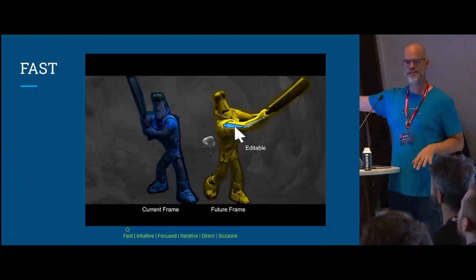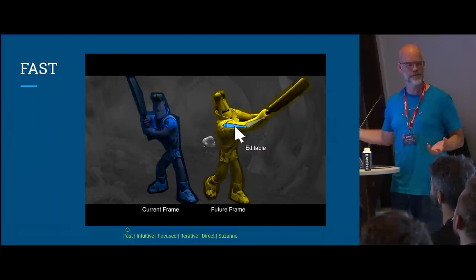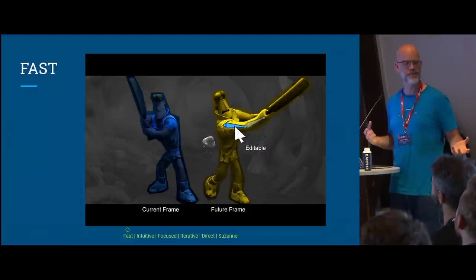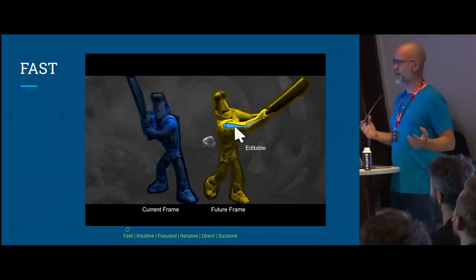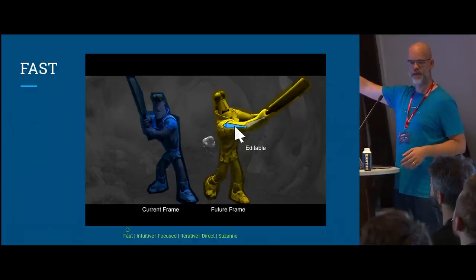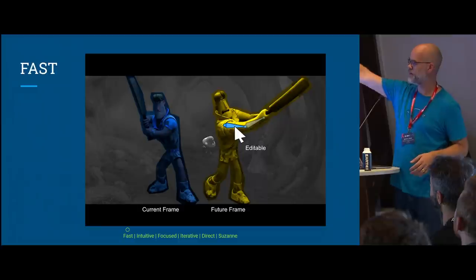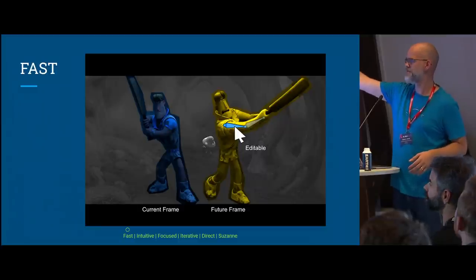Once we get Blender that fast, it opens doors. For instance, we could do onion skinning where the current frame is shown, a future frame is shown, and it's still editable.